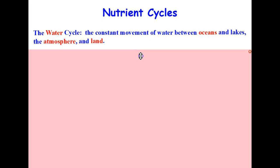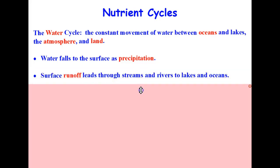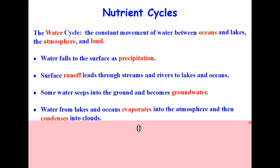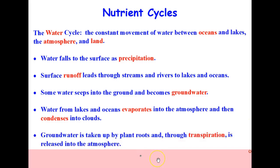The water cycle is the constant movement of water between oceans and lakes, the atmosphere, and land. Water falls to the surface as precipitation. Surface runoff leads through streams and rivers to lakes and oceans. Some of that water seeps into the ground and becomes groundwater. Water from the lakes and oceans evaporates into the atmosphere and then condenses into clouds.